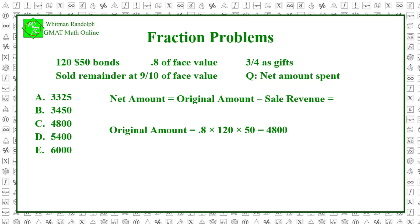And here are the number of bonds left over after she gave them to her relatives. Number of bonds left over equals 120 minus three-quarters times 120, and that equals 120 minus 90, which equals 30.